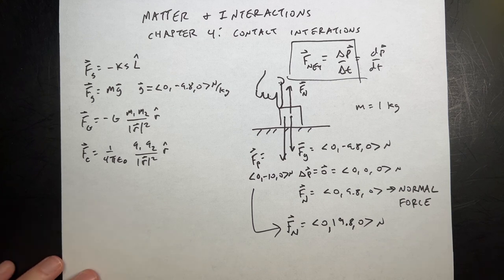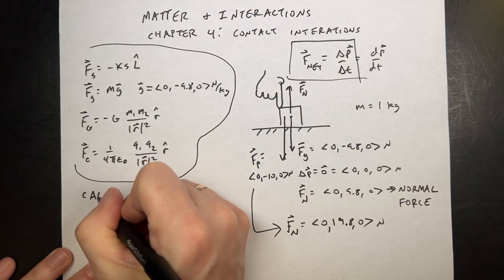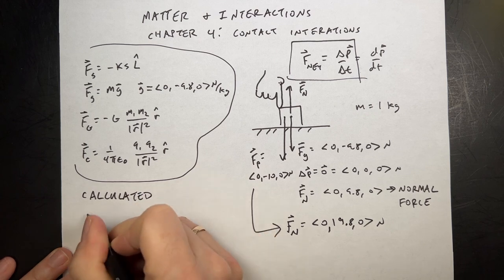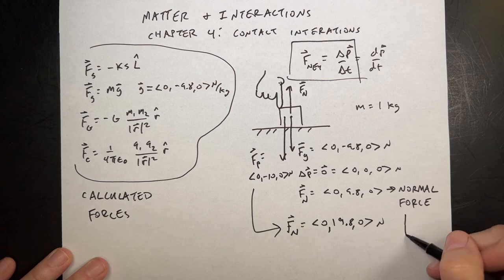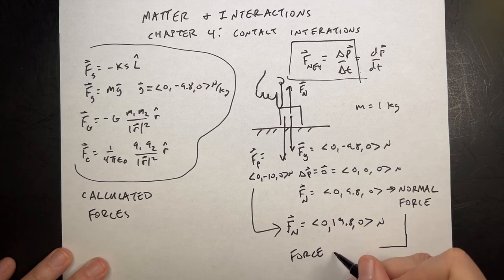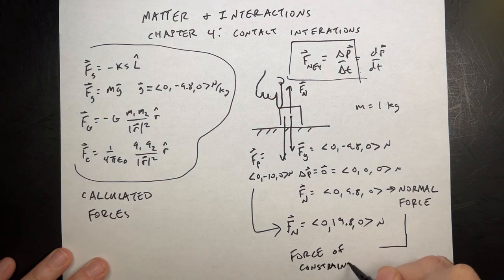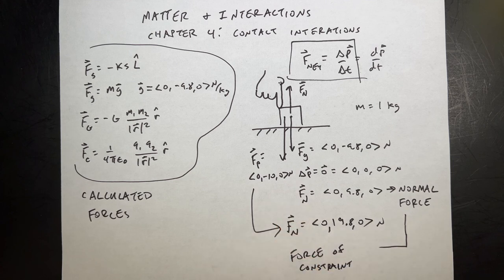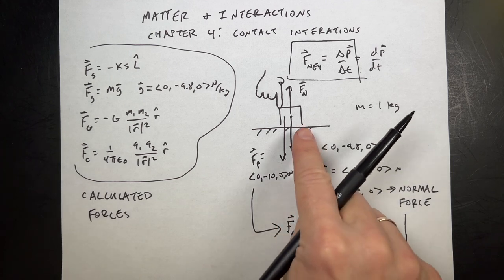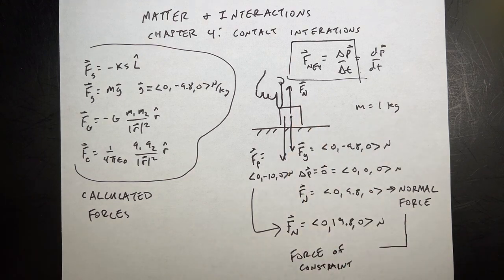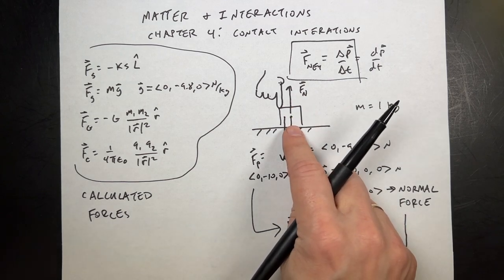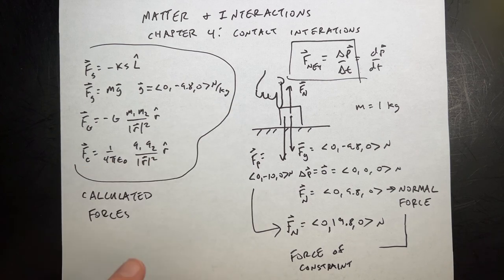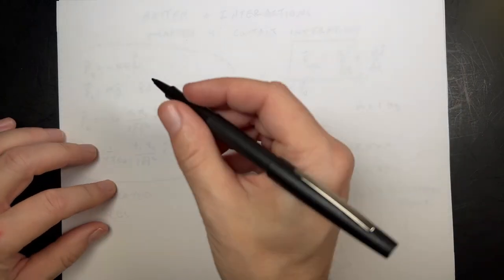So this normal force is very complicated — these are calculated forces. This normal force is called a force of constraint, or a constraint force, because it has no equation. Its only equation is: do what you need to do to make sure the object doesn't go through the table. If I push down with 20 billion newtons, maybe the table can't provide a normal force that large and it will break. The important question is: how does the table know exactly what force to push?